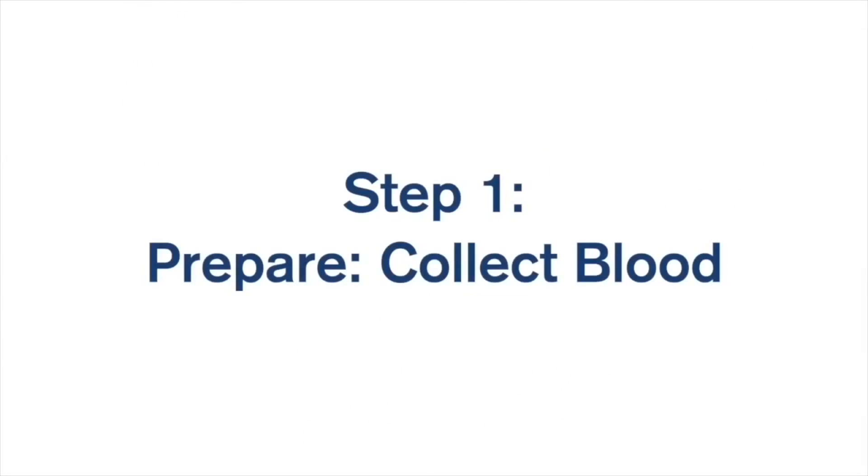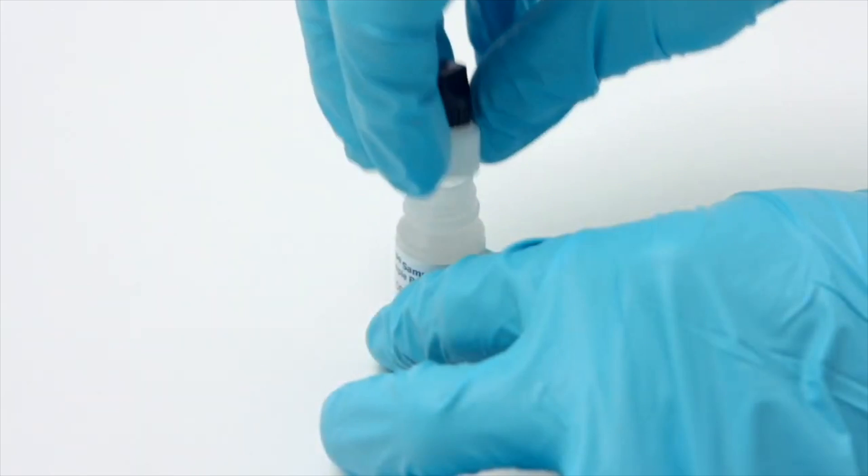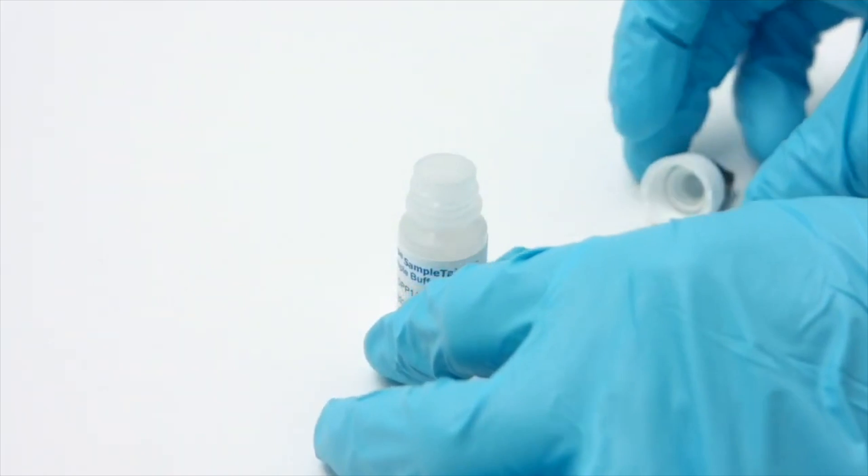Step 1: Prepare. Collect blood. Remove the white cap from the DPP sample tainer bottle, keeping the black cap screwed on to the white part of the cap.